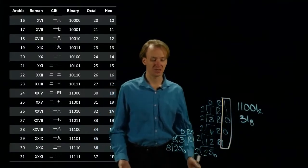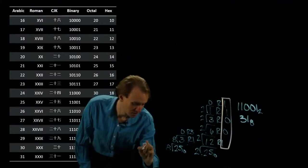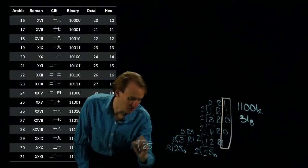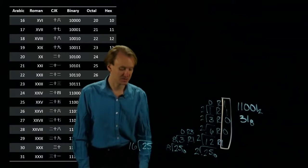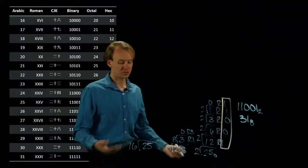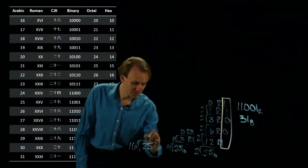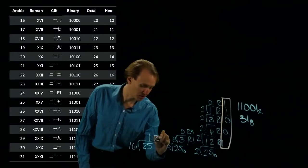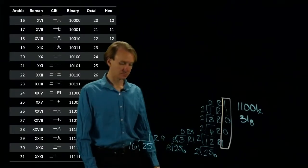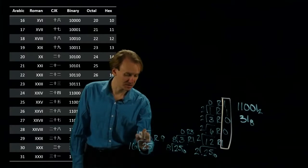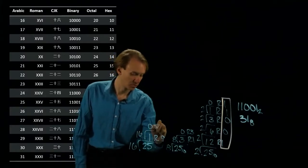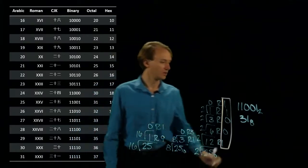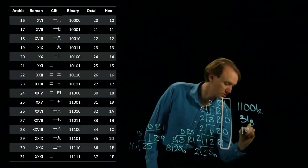Hexadecimal will be the same way. Take 25, divide by 16. 16 goes into 25 once with a remainder of 9. And then I divide 1 by 16, it will give me 0 remainder 1. And my hexadecimal number is 19.